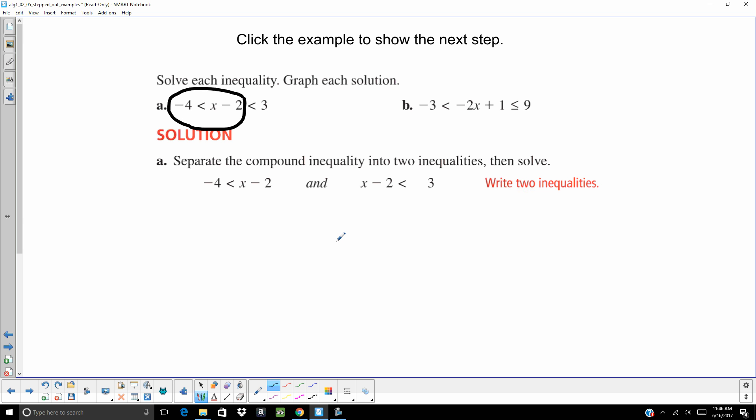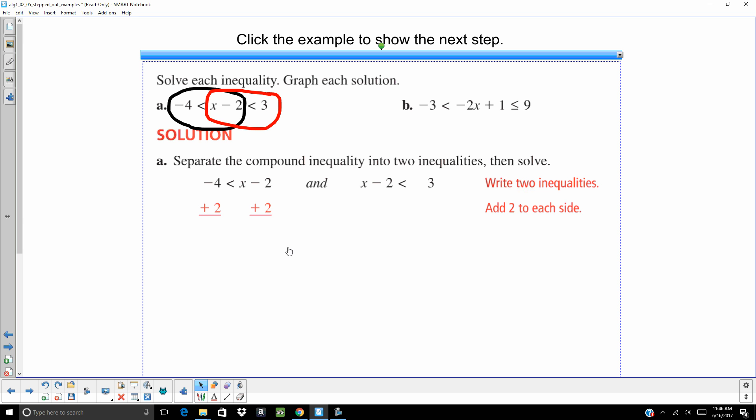Negative 4 is less than x minus 2. Let's just do the next one in another color. My next inequality is going to be x minus 2 is less than 3. And what you're going to do is you're going to solve each one of those. And you're going to get negative 2 is less than x. And x is less than 5.